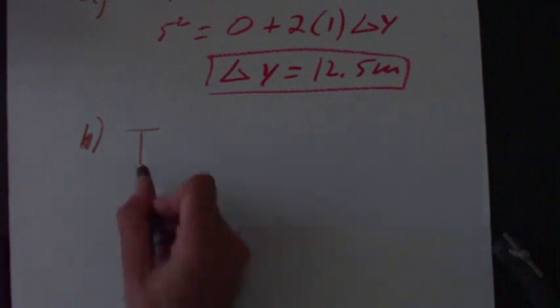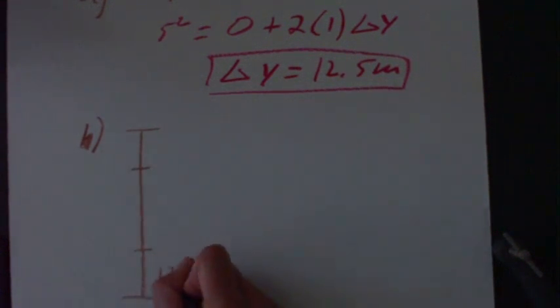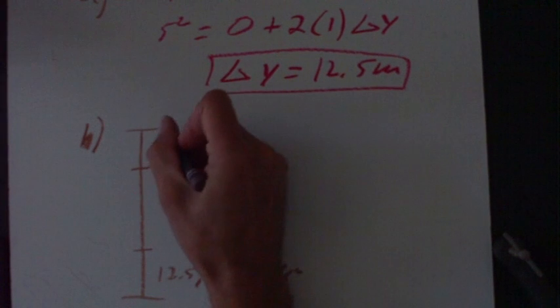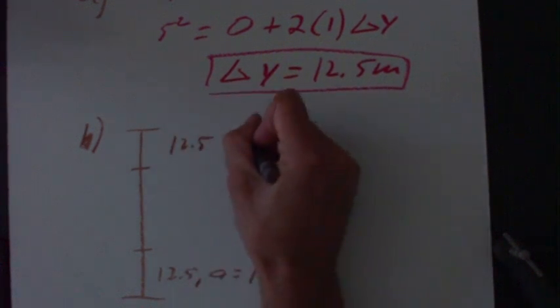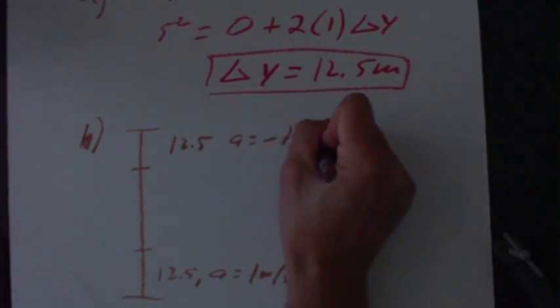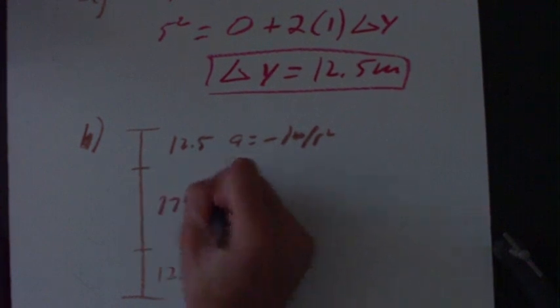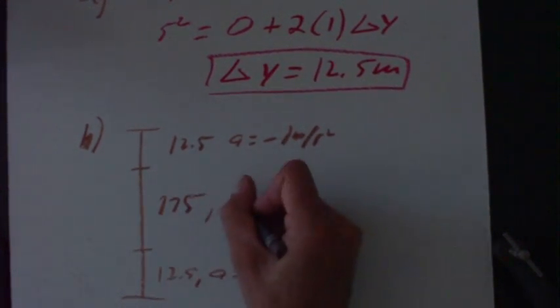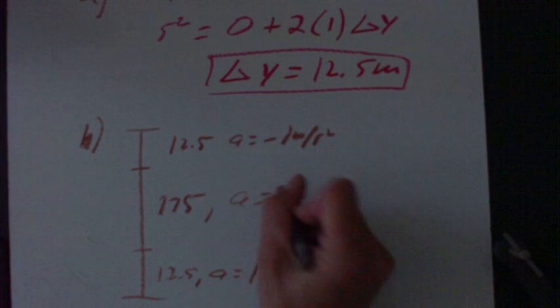We have 12.5 meters here, where a is one meter per second squared. Then we have 12.5 meters up here, where a is minus one meter per second squared. Then we have 175 meters in the intervening spot, where a is equal to zero.